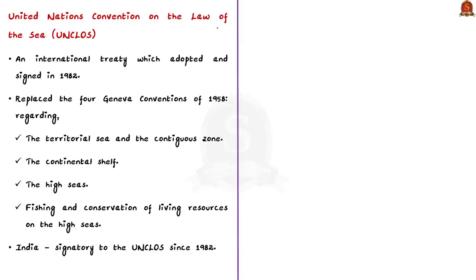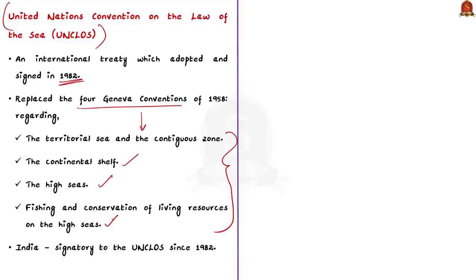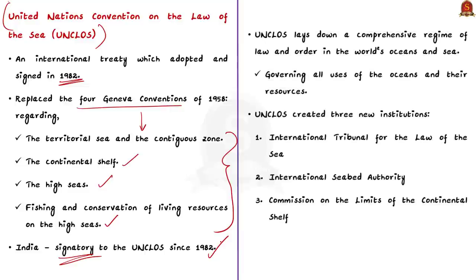Coming back to the article's discussion, the United Nations Convention on the Law of Sea is an international treaty which was adopted and signed in the year 1982. This convention replaced the four Geneva Conventions of 1958. These four conventions were concerned with the territorial sea and contiguous zones, continental shelves, high seas, and fishing and conservation of living resources on the high seas. Note that India became a signatory to the United Nations Convention on the Law of Sea in the year 1982.